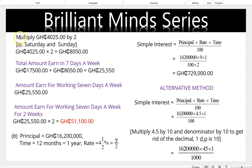The weekend rate is 4,025 per day; multiplied by 2 (Saturday and Sunday) = 8,050. Total amount earned in one week (7 days) = weekday earnings plus weekend earnings = 17,500 + 8,050 = 25,550 Ghana cedis. For two weeks, multiply by 2: 25,550 × 2 = 51,100 Ghana cedis.